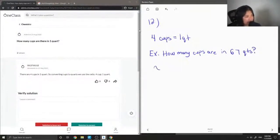The first thing I would do is write x cups, since this is the units that I'm looking for, divided by 67 quarts. And then on the right side of the equal sign, I'm going to put my conversion factor, which is four cups over one quart.